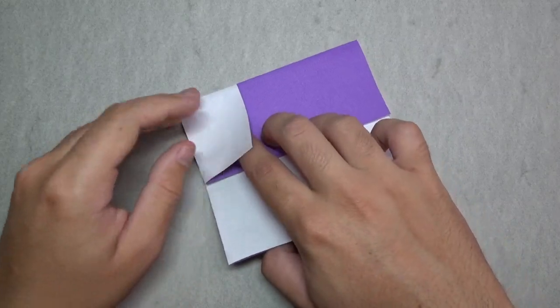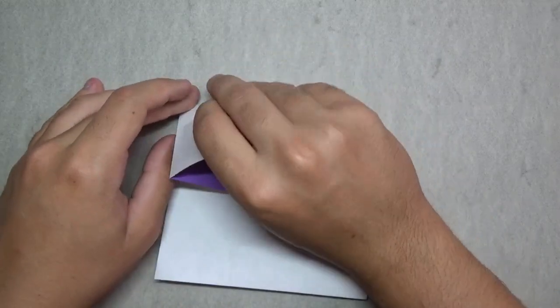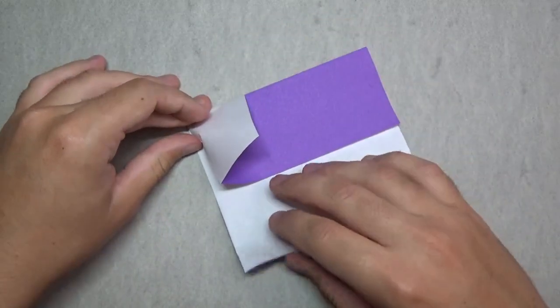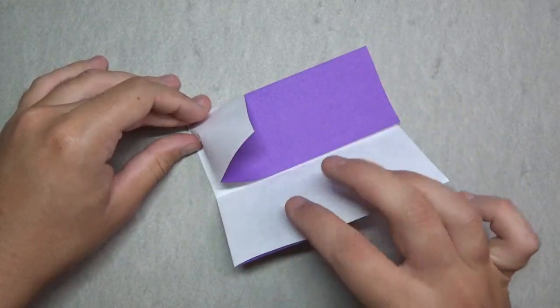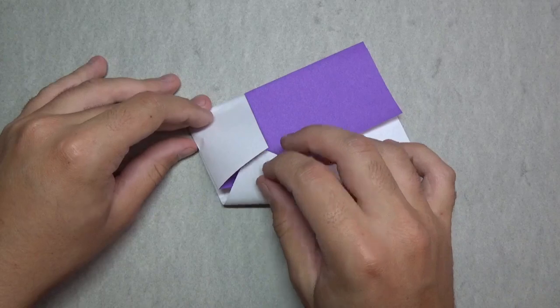And now comes a kind of tricky step. Not really though. We're going to open this pocket right here, like this, and we're going to tuck this point inside there. So we're refolding this but tucking the point into the pocket.